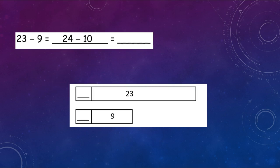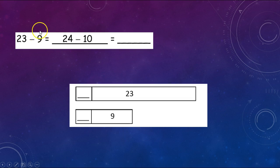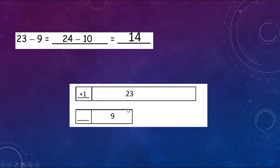Now we're going to use a tape diagram to help us solve this. We have the number sentence 23 minus 9 equals 24 minus 10. Which number did we change? We changed to the nearest 10. So 9 was closest to 10, so we changed it to 10. We added one more, and the difference is 14. So we changed 23 and added one more to it, and we changed 9 and added one more to it.